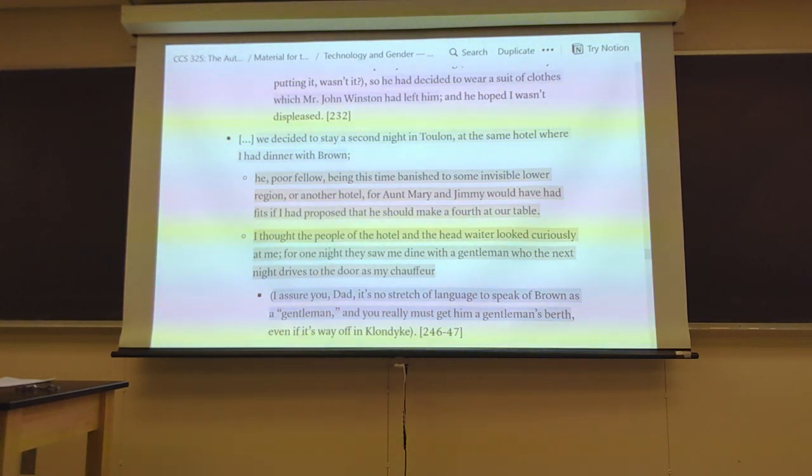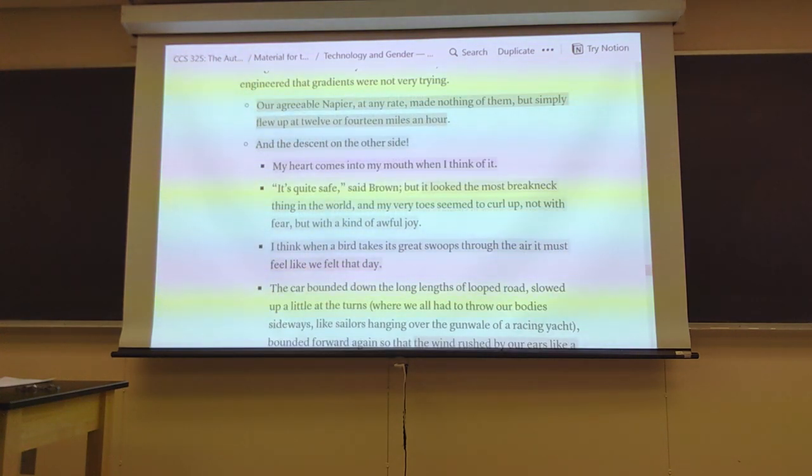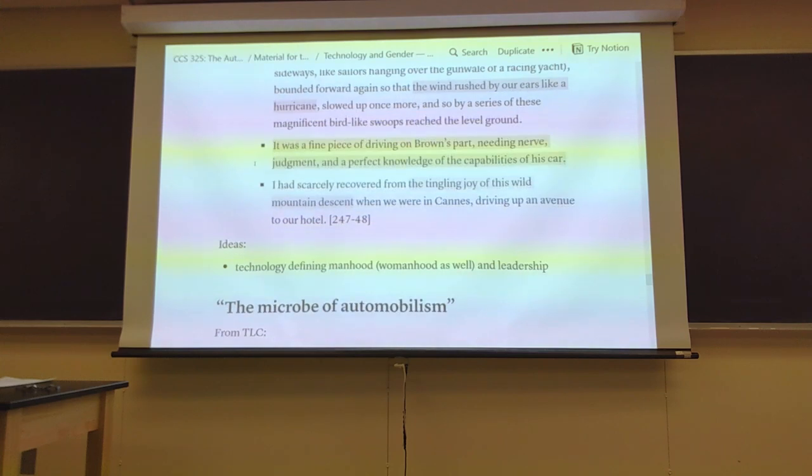This is the passage I was referring to. Our available Napier, Napier was a British brand famous for their race cars, simply flew up the hill at 12 or 14 miles an hour. Flew up because a car from that time would have either struggled going up, not being able to climb certain hills, or would have done so at a much lower speed. So this speed going up a hill is considered to be great speed, and they have more references.